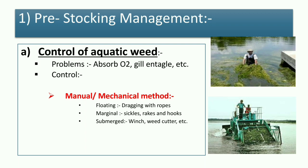In the manual and mechanical method, floating weeds are removed by dragging with ropes. Marginal weeds are removed using bicycle rakes and hooks, and submerged weeds are removed using a winch or weed cutter. As shown in the diagram, the first photo shows floating weeds being dragged with rope, another shows removal of submerged weeds, and a third shows a weed cutter.